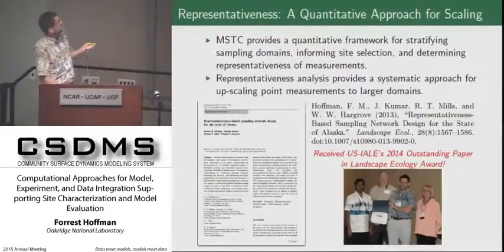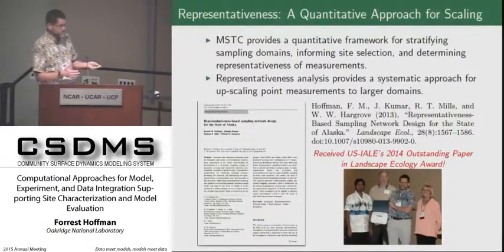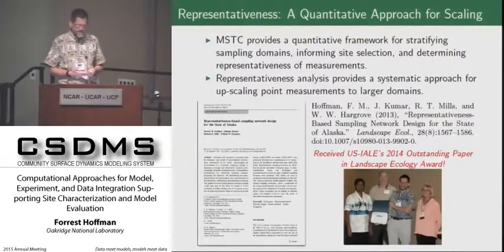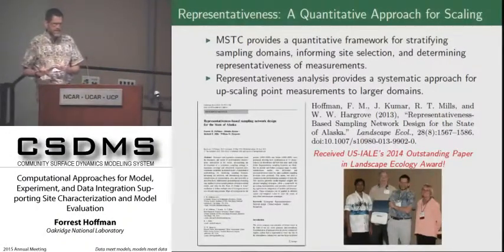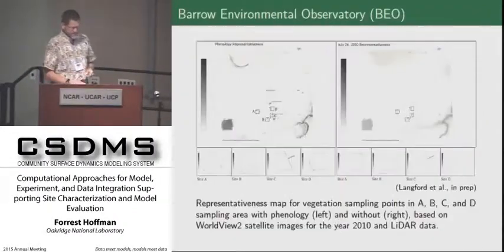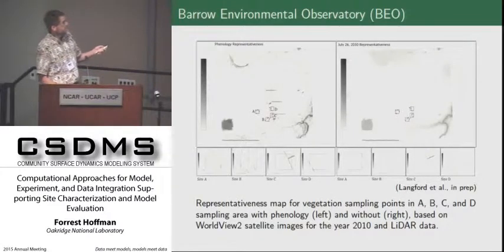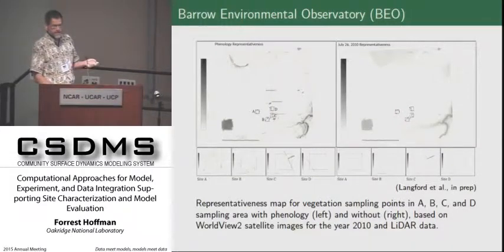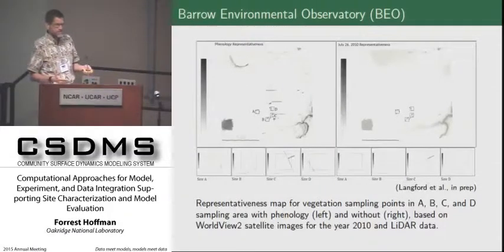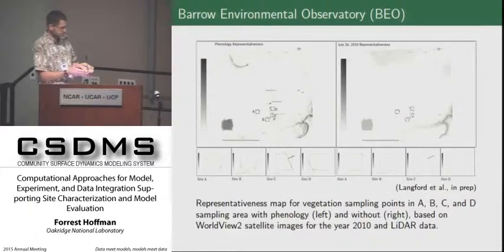We had a little paper on this which you can look up based on this algorithm, and we think it provides a nice systematic approach for picking sites, but also for helping us understand how representative measurements are so that we can upscale them and extrapolate from them based on other surrogates. In fact, we're doing that now at a very fine scale within the Barrow Environmental Observatory by using WorldView2 satellite data at 2.3 meter resolution to figure out what the plant distributions are within our sampling sites and be able to extrapolate individual plant measurements to the larger scale to feed our models.